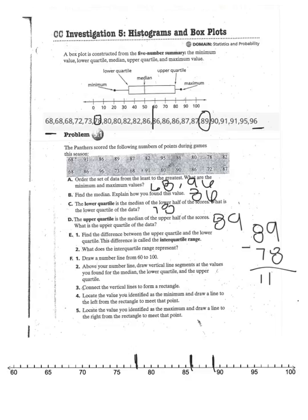From there, you connect the vertical lines to form a rectangle. For 4, they want you to locate the value you identified as the minimum and draw a line to the left from the rectangle to meet that point. We said that the minimum was 68. So, we'll put a dot there and connect it to our box.